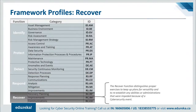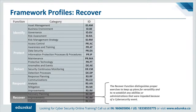The Recover function develops and implements appropriate activities to maintain plans for resilience and to restore any capabilities or services that were impaired due to a cybersecurity incident. The Recover function supports timely recovery to normal operations to reduce the impact of a cybersecurity incident. Examples of outcome categories include recovery planning, improvement, and communications. These five functions were selected because they represent the five primary pillars for a successful and holistic cybersecurity program, aiding organizations in expressing cybersecurity risk management at a high level and enabling risk management decisions.